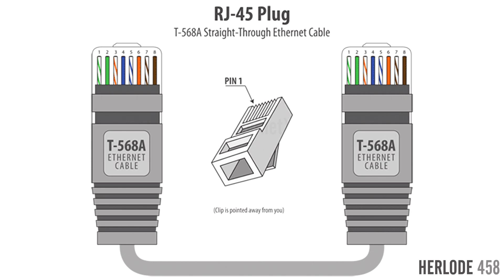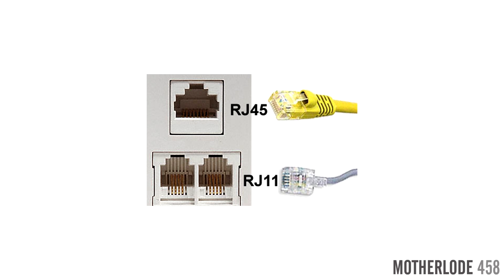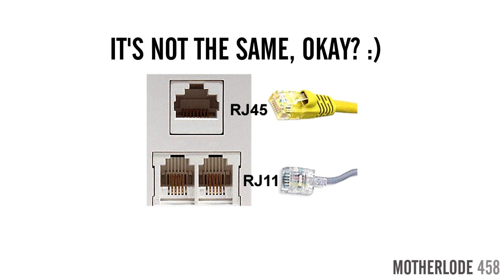At the end of each Ethernet cable there's an RJ45 plug with eight separate wires inside lying in exact order. I've seen many people confuse Ethernet cables with standard telephone cables, and in reality there's a big difference because the Ethernet cable has eight wires whereas the telephone cable has only four.